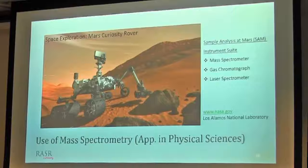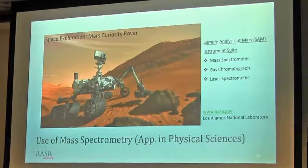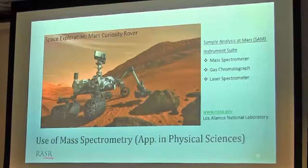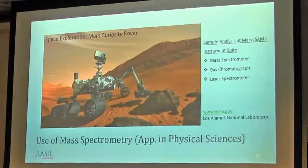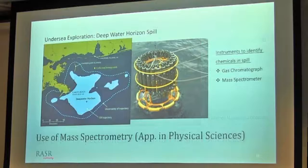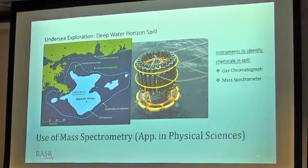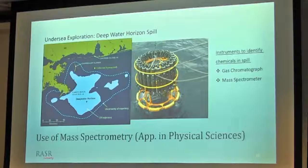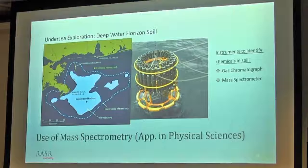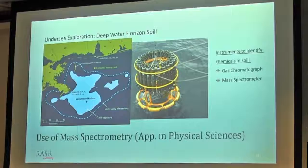Mass spec is also one of the top three instruments which has been sent to Mars. The photo has been taken from NASA project for space exploration. It is mainly in use for surface analysis or the composition of the elements present on the Mars surface. Mass spec is also being used in the petroleum industry as well as for the Deepwater Horizon oil spill. Along with gas chromatograph, mass spec is a tool used to look for which compound has been spilled and how to get rid of them.